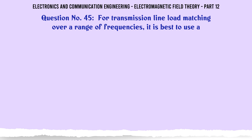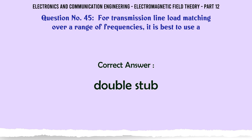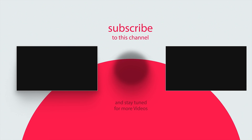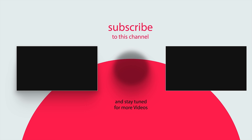For transmission line load matching over a range of frequencies it is best to use: A. Double stub, B. Balun, C. Single stub of adjustable position, D. Broadband directional coupler. The correct answer is Double stub.